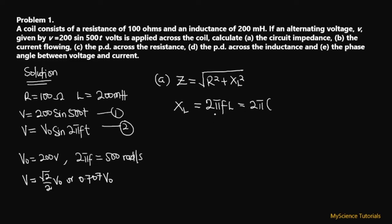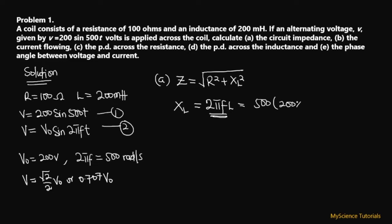We've been given 2πf = 500, so instead of computing f separately we use that directly. Our XL = 500 × 200 millihenry = 500 × 200 × 10⁻³. Computing this gives us XL = 100 ohms as our inductive reactance.